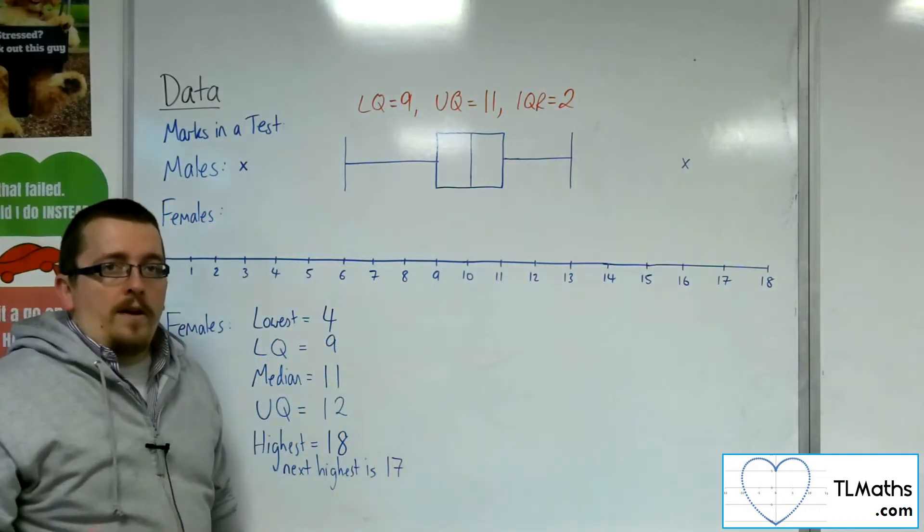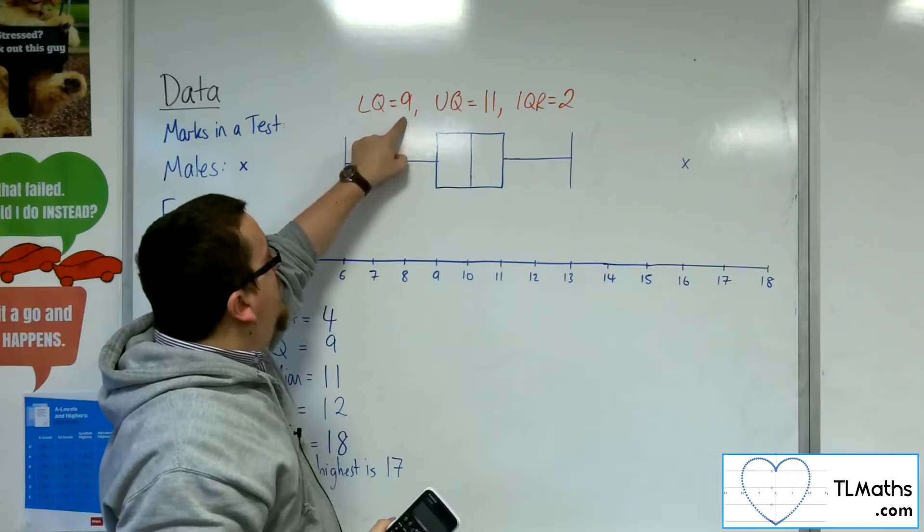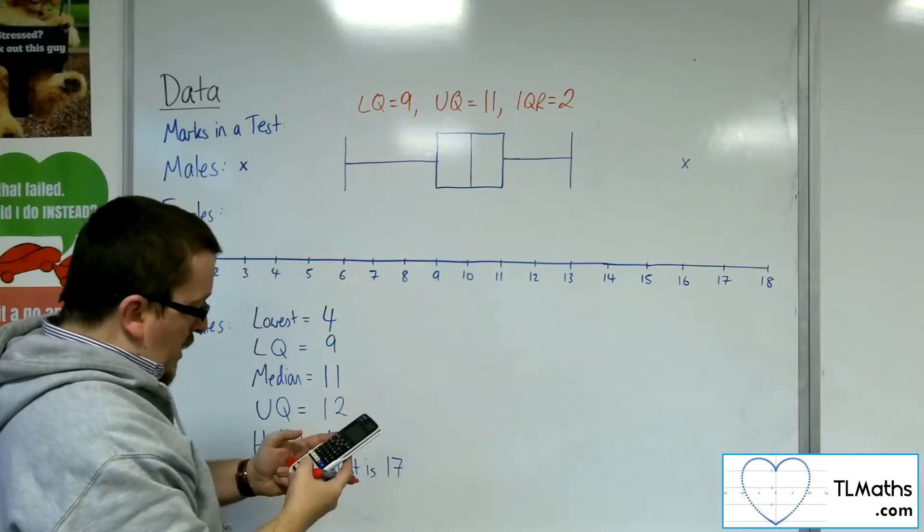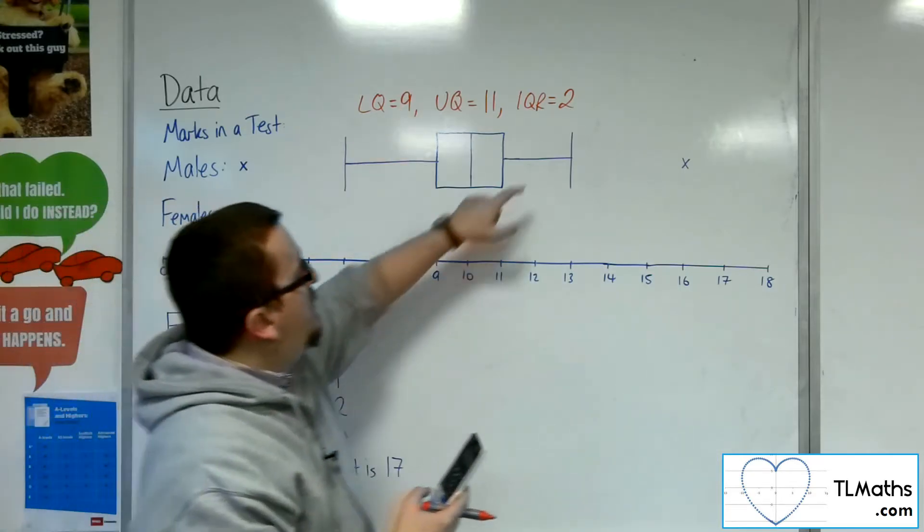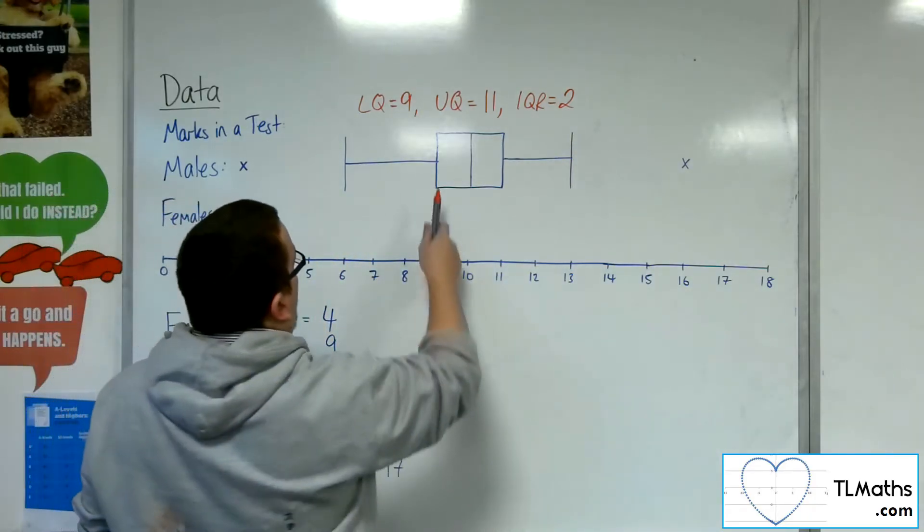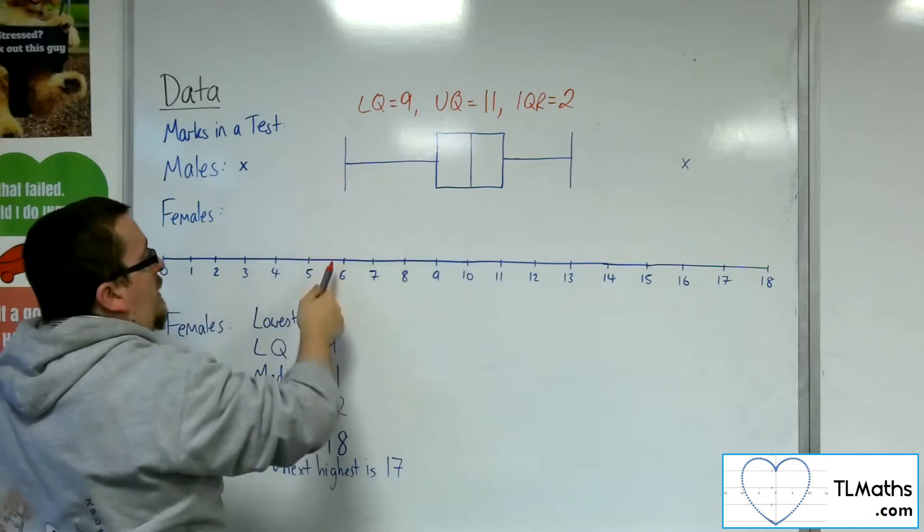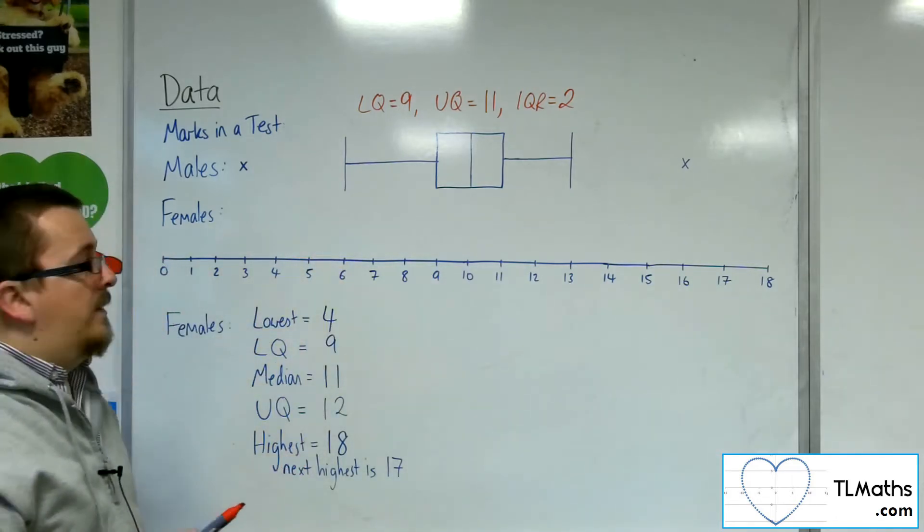So if I was looking at outliers, outliers are found by looking at 9, the lower quartile, take away 1.5 times the interquartile range. And that gets me down to 6. So this is the boundary for outliers that I've found.